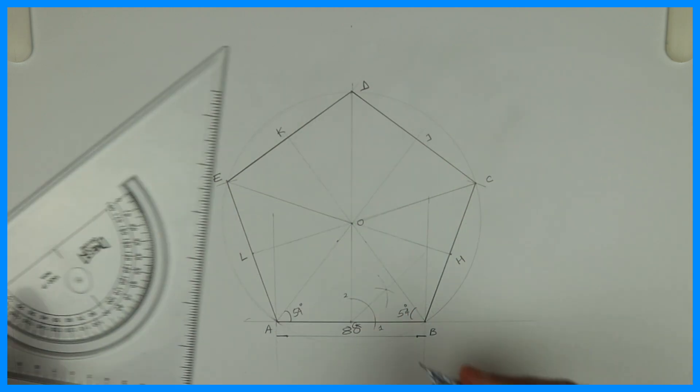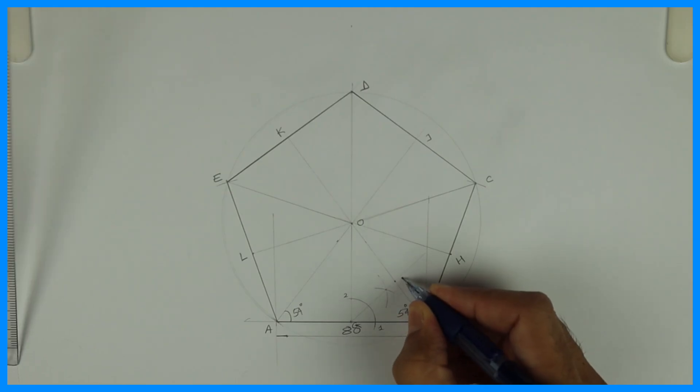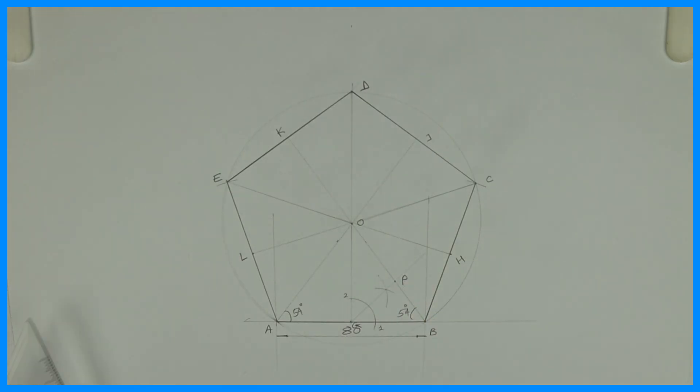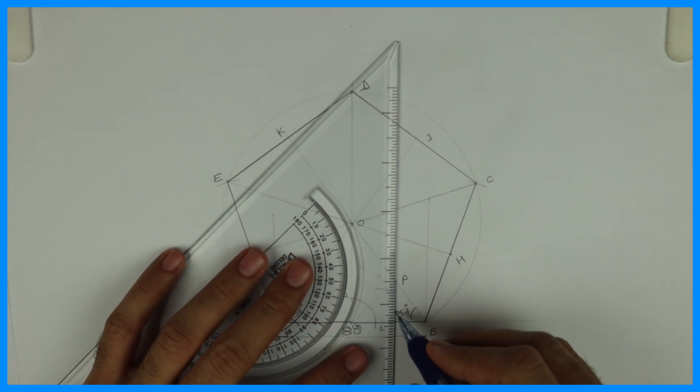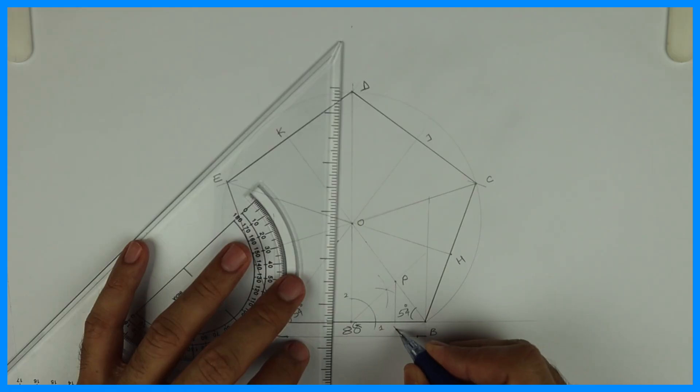So wherever 45 degrees intersects with OG, that will be one point, P. And from P you can draw a vertical line. Wherever it will cut, that is V.